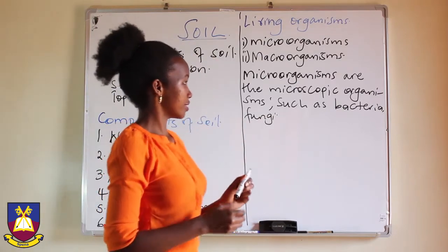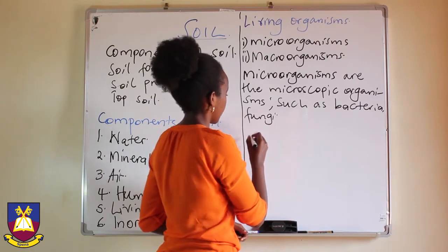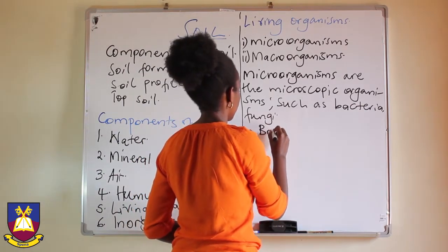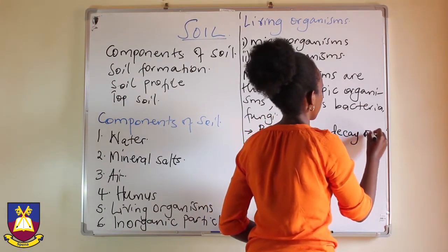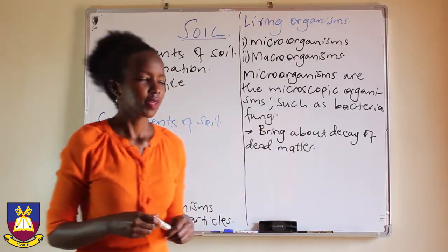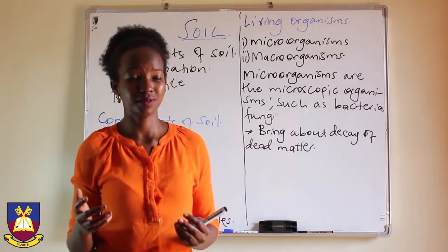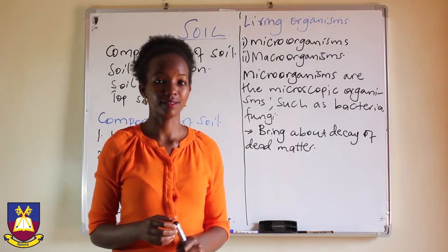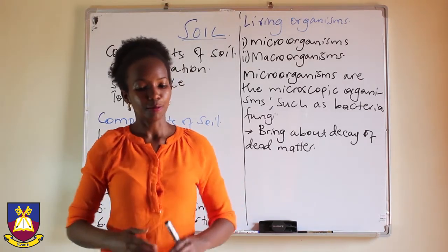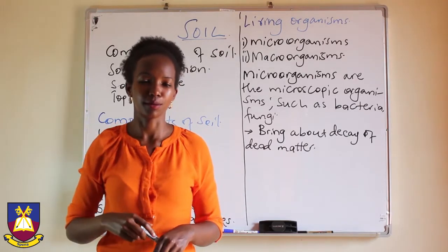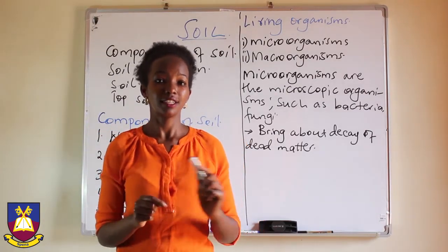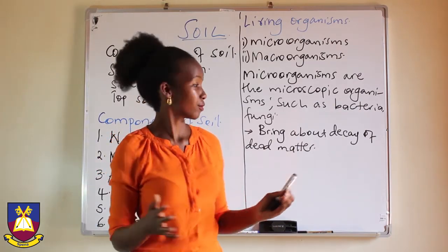These are very important components of soil. Number one, they bring about decay. If a plant or animal dies — imagine all the cats or dogs knocked down by cars over the past ten years — if all those didn't decay, we would have heaps of dead organisms on the earth's surface. Thanks to the microorganisms in soil that bring about the decomposition and breakdown of that dead matter.